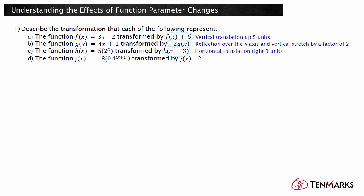The function j of x equals negative 8 times 0.4 to the x plus 1 power, transformed by j of x minus 2. The 2 is subtracted from the function value, so this is a vertical shift downward.